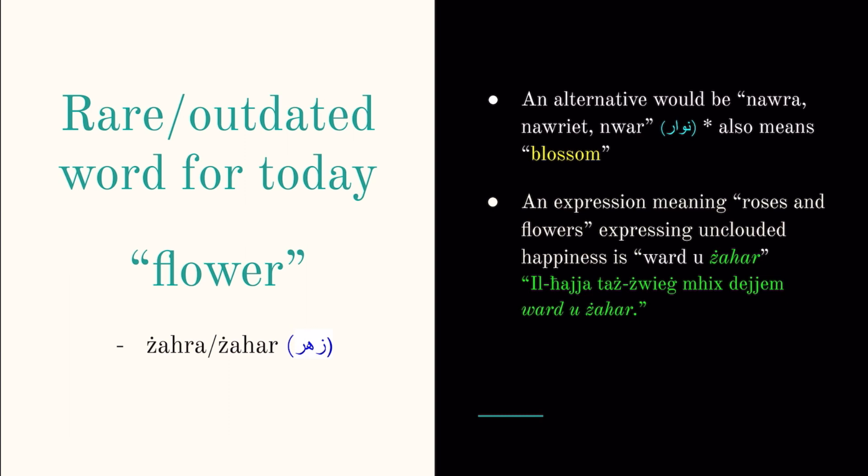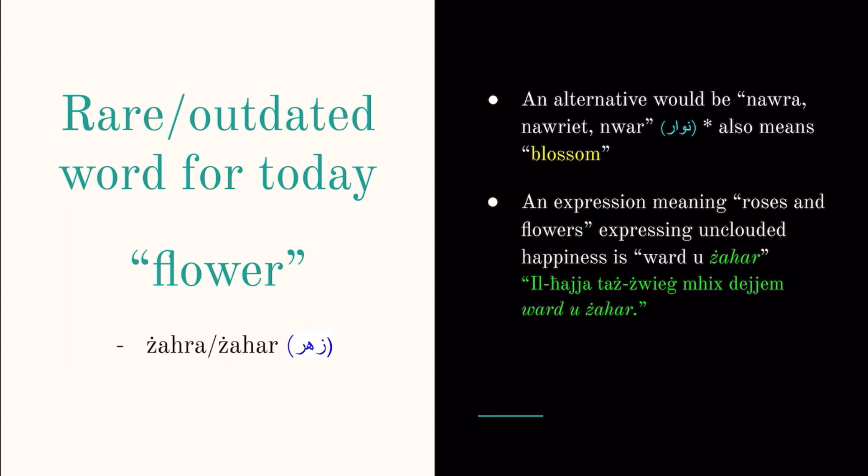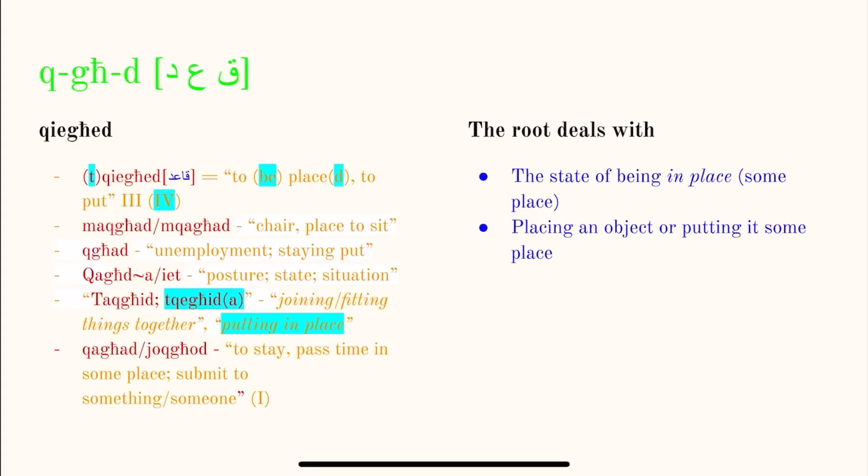And the example sentence is: tazwich mish deyem ward uzar, meaning the married life is not all roses. Meaning that your married life, all marriages have problems or they all have their ups and downs, basically something like this. And today's trilateral root, this one is going to be interesting, at least for me it is. This root q-gh-d, it is a very versatile root.